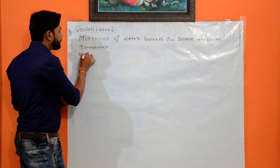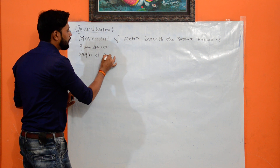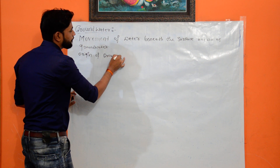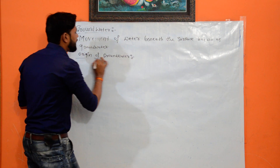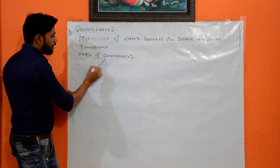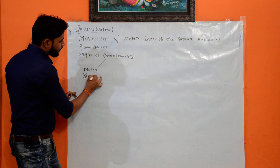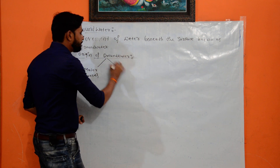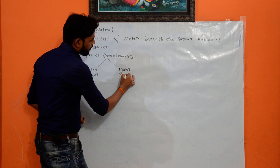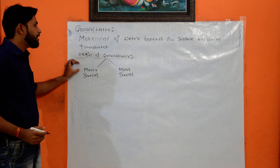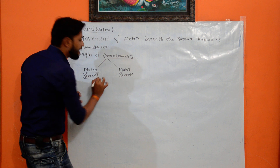The origin of groundwater. In the origin of groundwater, groundwater is bifurcated into number one, the major sources, and number two, the minor sources. First we will deal with the major sources.